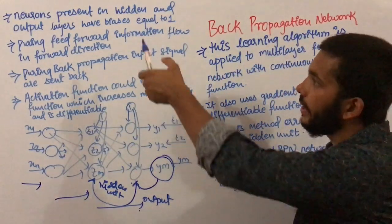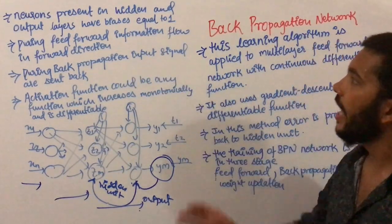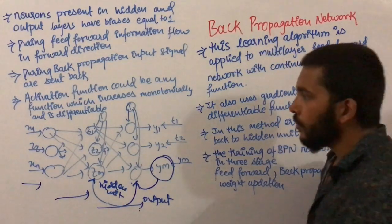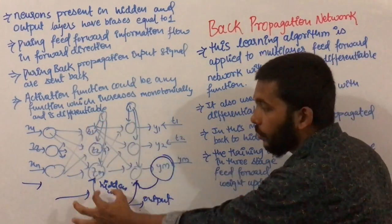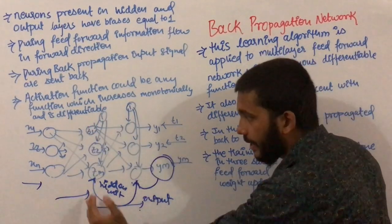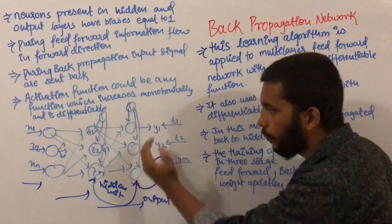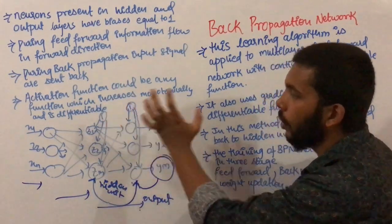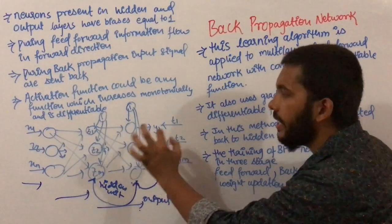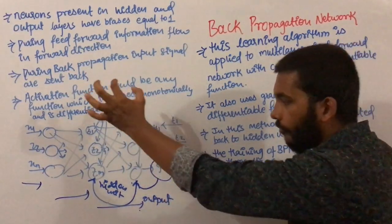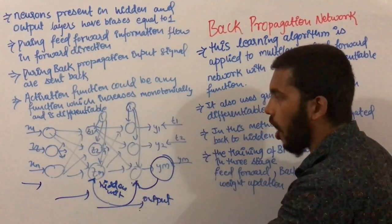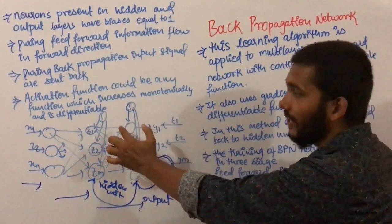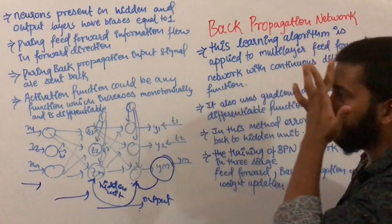Neurons present in the hidden and output layers have biases equal to 1. Each unit in the hidden layer and the output layer has a bias whose value is equivalent to 1.